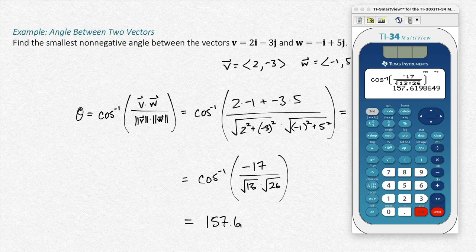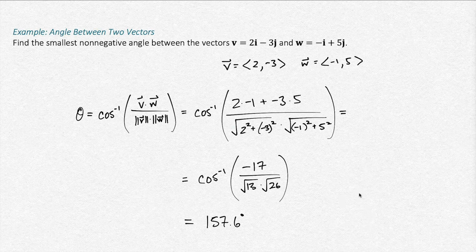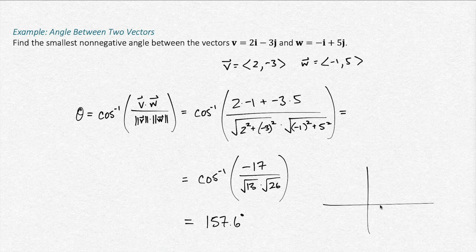So 157.6 degrees. We could, of course, draw a little picture just to make sure that this seems reasonable. I'll go ahead and do that. If I draw these with their initial points at the origin, then I've got V is 2, negative 3, like that.